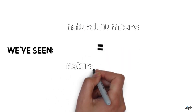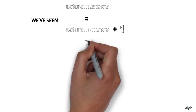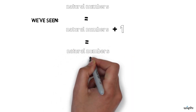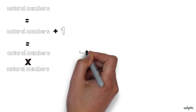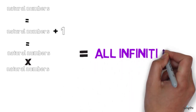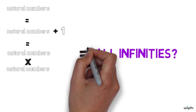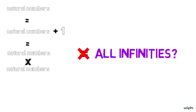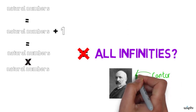We've seen that there are a bunch of infinities which are really the same size, in the sense that they can all be put in 1-1 correspondence with one another. So one might be tempted to think that all infinities are the same size — that any two infinities can be put in 1-1 correspondence with each other — but in fact that is not true, and that is the second big theorem that Cantor proved.